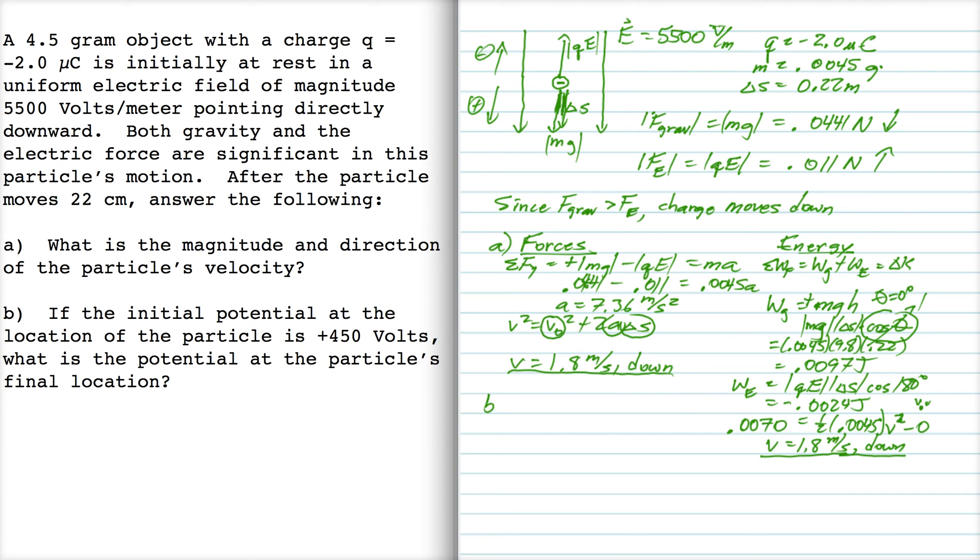All right, so part B says if the initial potential is 450 volts, what is the final potential down here after it has moved 22 centimeters? Okay, well, in the direction, remember the difference between potential energy and potential.